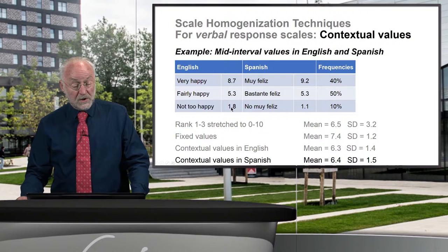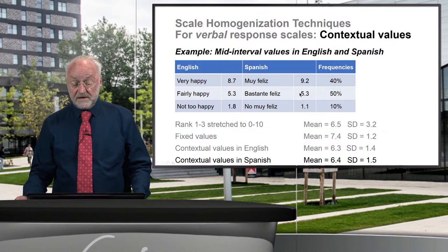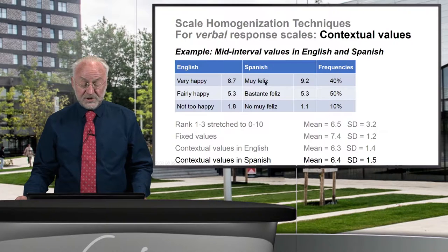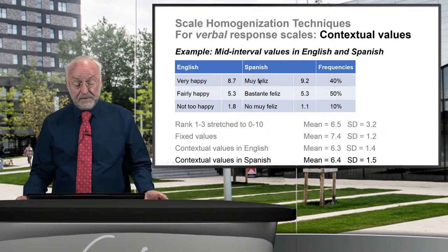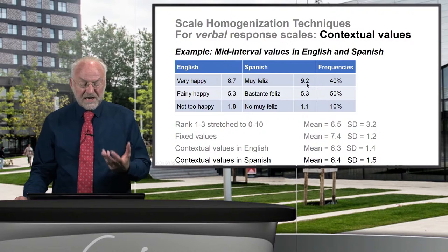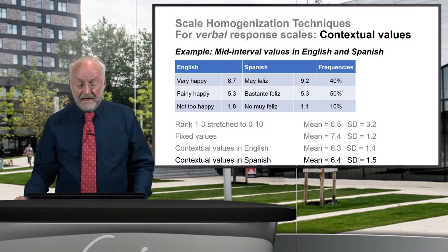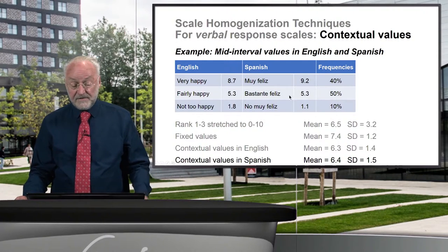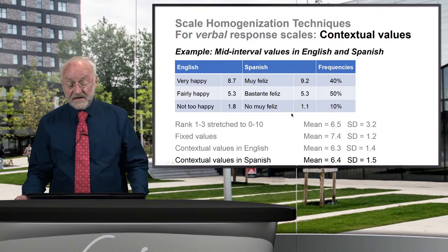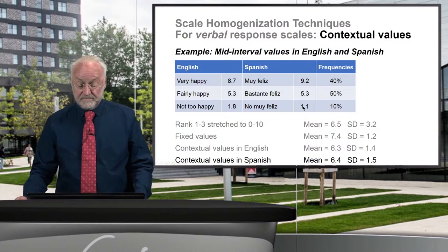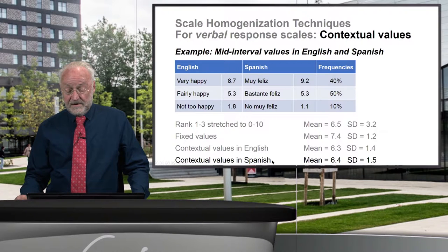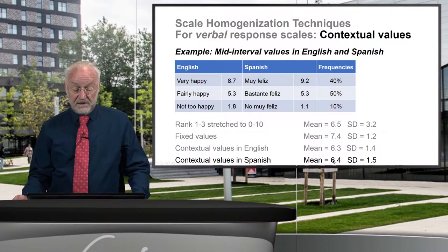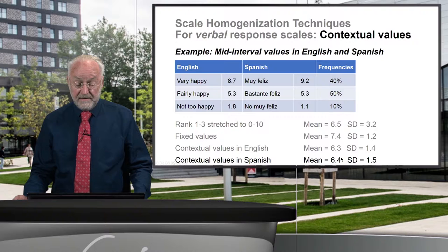You can do this in different languages. In Spanish, the equivalent of "very happy" — muy feliz — is rated higher, bastante feliz (fairly happy) is similar, but no muy feliz (not too happy) is rated lower. Computing a contextual value in Spanish gives 6.4, which is actually pretty close to the value in English.